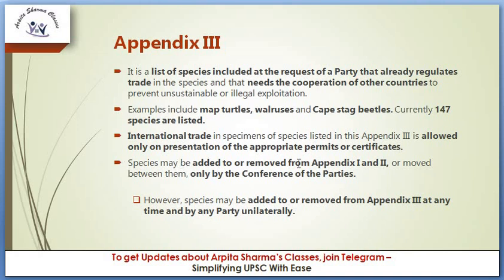Species may be added or removed from Appendix 1 and 2, or moved between them, only by the Conference of Parties. Only the Conference of Parties can take such a decision. However, in the case of Appendix 3, species may be added or removed at any time by any party unilaterally.